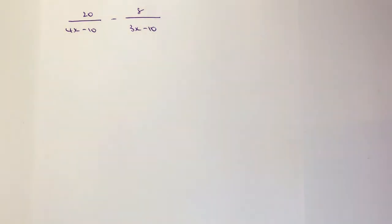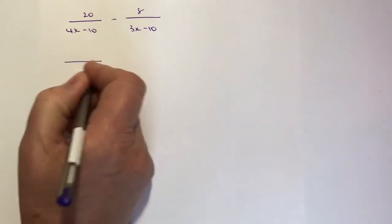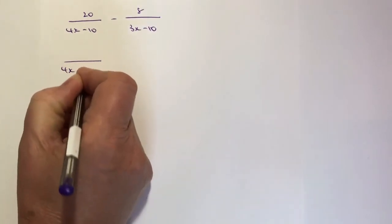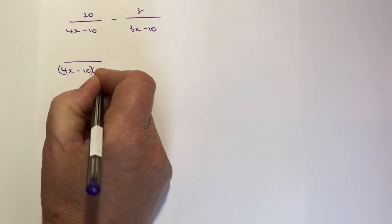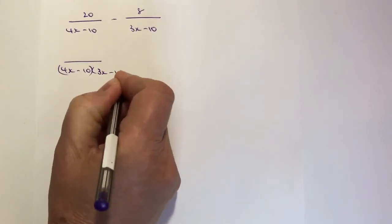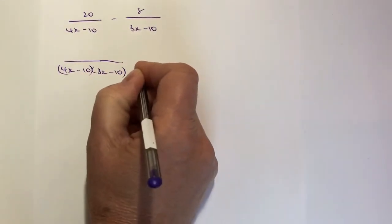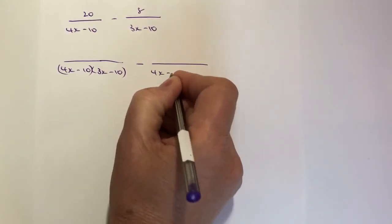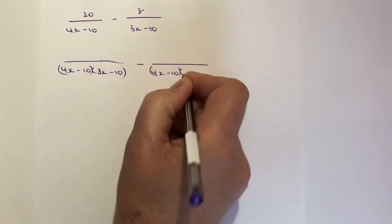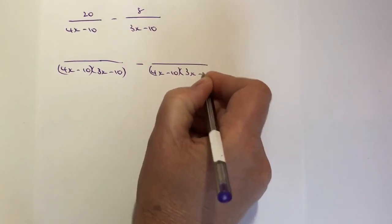So the first thing I'm going to do is I'm going to write both these fractions under the same denominator. So I've got 4x minus 10 multiplied by 3x minus 10, and then the second fraction I'm also going to have the same, which is 4x minus 10 multiplied by 3x minus 10.